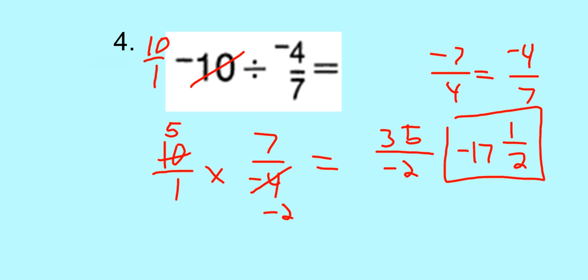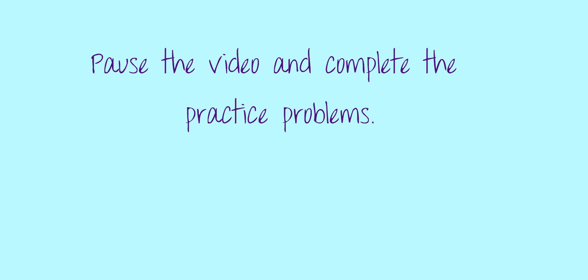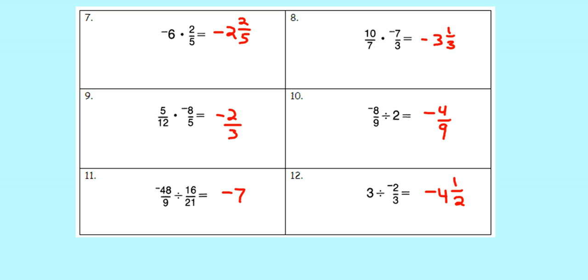Now take a minute here. Pause the video and work out the practice problems at the bottom. Use that cross-reducing that I showed you in the video. It will help with some of the larger numbers being multiplied together, and it will especially help when we start dividing and multiplying mixed numbers. Now that you've finished your practice problems, unpause the video and check your answers. Thank you for doing your homework tonight. If you have any questions, please write them down, bring them to class, and I can go over them with you.